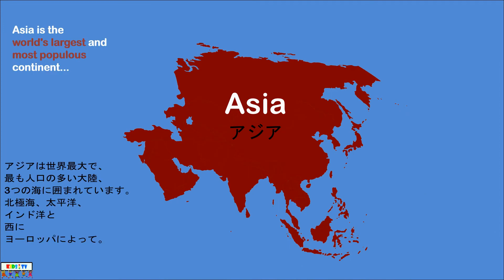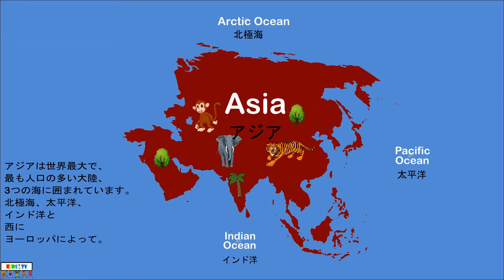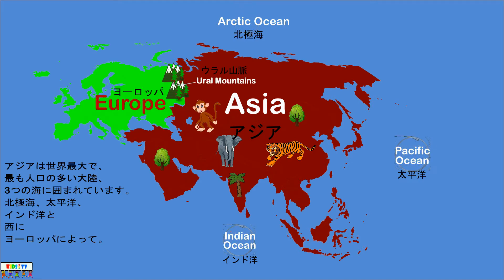Asia is the world's largest and most populous continent, bordered by three oceans: the Arctic Ocean, the Pacific Ocean, and the Indian Ocean, and to the west by Europe.